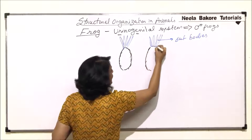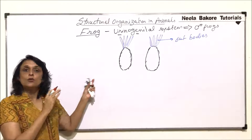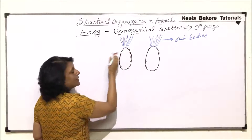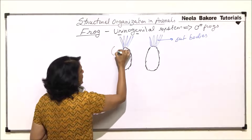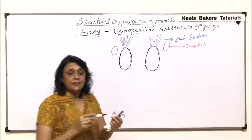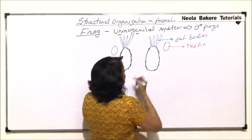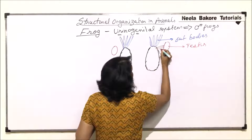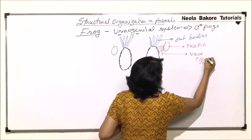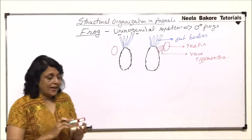Now let us see how the kidney and the reproductive part are connected. The testes are placed very close to the kidney — actually on the kidney. From the testes, many small ducts carry the sperms. Their number normally varies from 10 to 12, and these ducts are known as vasa efferentia.